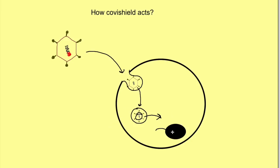All viruses use our body's cell machinery — that is the nuclear machinery — to produce proteins. Once this DNA is inserted into the nucleus, it is transcribed into messenger RNA, and from this messenger RNA, ribosomes produce proteins. So the spike proteins are produced by these cells.